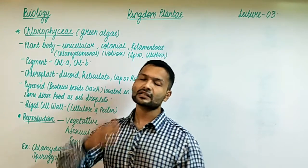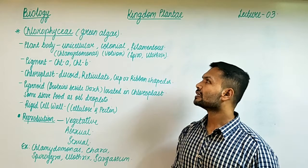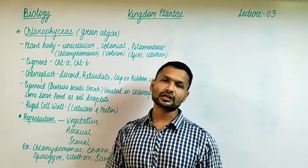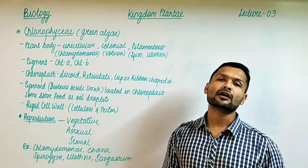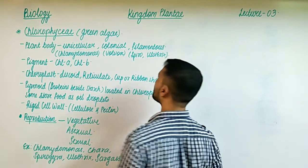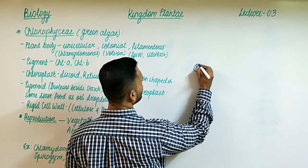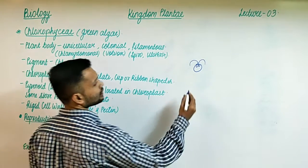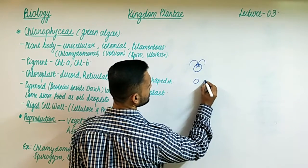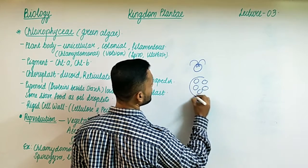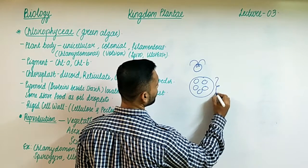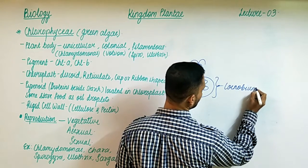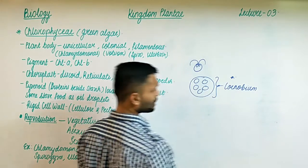Looking at the plant body, as seen in the general characteristics of algae, they may be unicellular, multicellular, living in colonies, or some are branched. Chlamydomonas is a unicellular example. For colonial, that means Volvox - it is found in colonies and the colony of Volvox is known as coenobium. Remember this - this was asked in JIPMER exam.